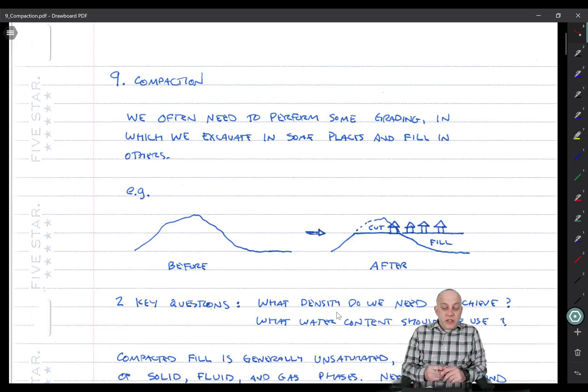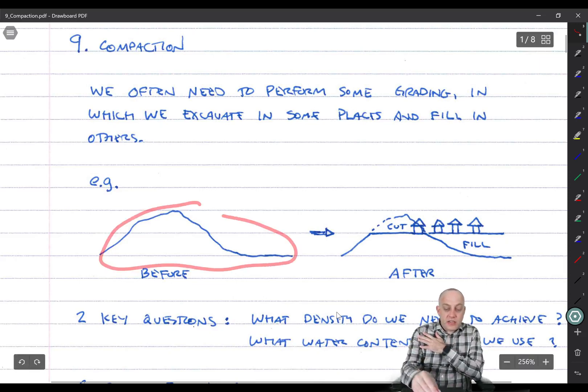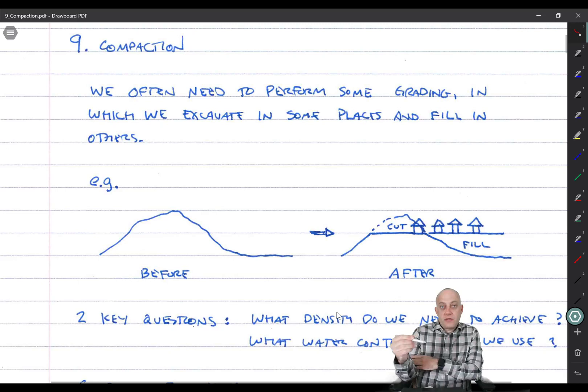So the idea of compaction is that often times we need to perform some grading. The soil surface is not exactly the right elevation, or there's topography that we need to flatten out. A common case is that maybe we have a hill like this, and we want to build on it, so we cut the top of the hill and fill in the valley. There are big portions of Southern California that have this very configuration. We'll kind of cut this soil and prepare it, grind it all up, and then carefully compact it in the valley to create this nice flat ground.